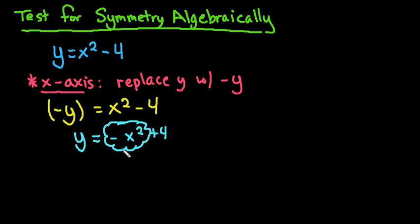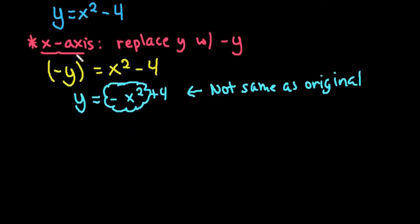And so if you look at this part right here, we now have a parabola that opens downward. So it's not the same as the original. And so this means that there is no symmetry with respect to the x-axis. Had I ended up with the exact same equation, then we would have had symmetry with respect to the x-axis.